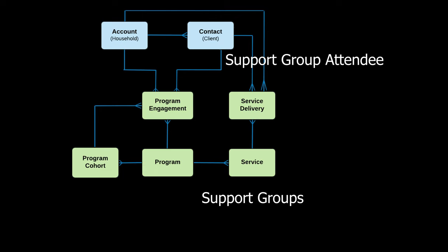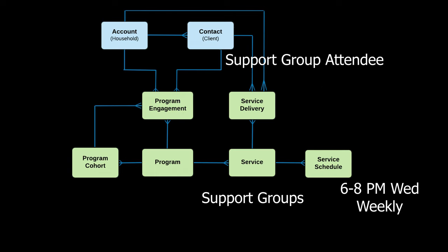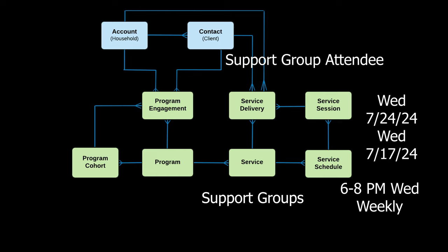If we want to record one or more planned services, like a class or an upcoming event, we can use the Service Schedule object, which records instances of a service to be provided — one or many sessions for individuals or groups. An example is a support group held every Wednesday night from 6 to 8 p.m. for six weeks. A single instance of a service schedule is recorded in the Service Session object, so each individual support group session would be recorded in its own service session record.